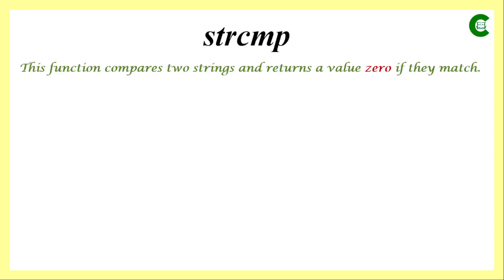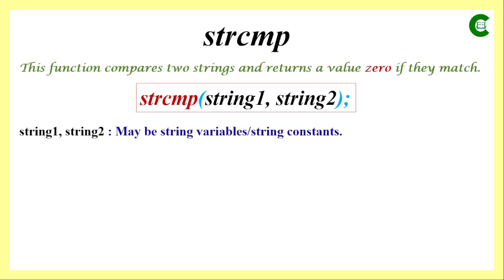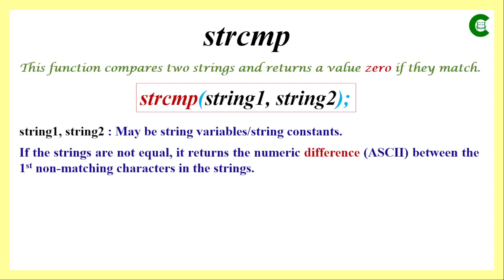The next string function is strcmp — 'cmp' stands for comparing. This function compares two strings and returns a numeric value based on the result. If both strings are the same it returns 0; if they don't match it returns some non-zero value depending on where the mismatch occurs. The syntax is: strcmp followed by two arguments in parentheses — which may be string variables, string constants, or one of each — terminated by a semicolon.